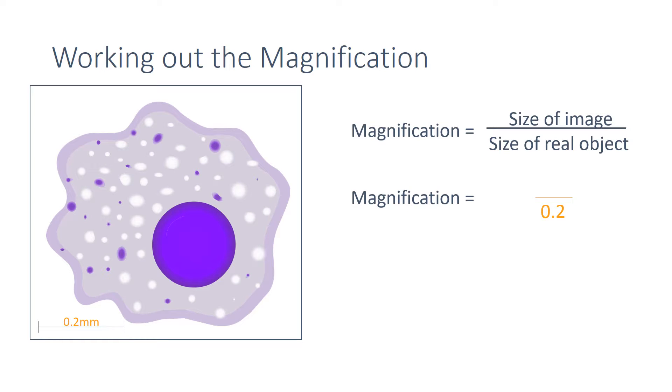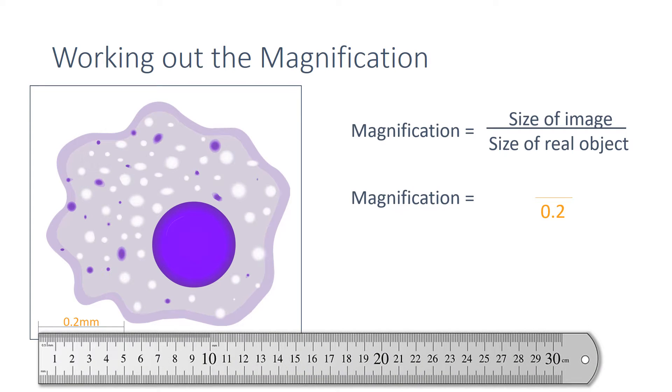You then need to work out the size of the image, and for this you're going to need a ruler. You measure the distance accurately, and here you can see that it's 5 centimeters. It's important though to make sure that the units are the same as the image size, and so we will use 50 millimeters.